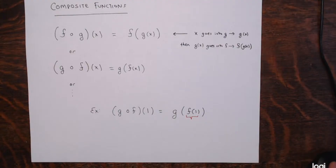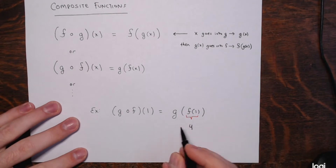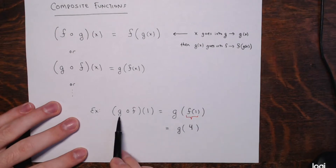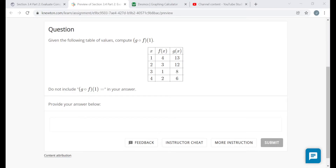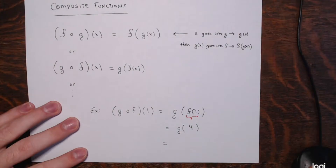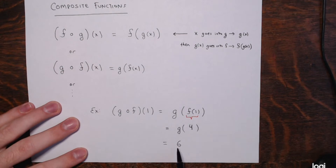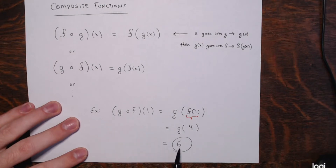So f of 1 is 4. Then I take 4 and plug it into g. Going back to the table, the inputs are down the left column — I go to an input of 4, and what's the output of g? g of 4 is 6. So for this composite function g of f, when you plug in 1 and go through the process, your final output is 6.